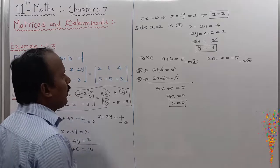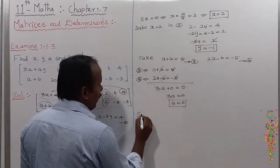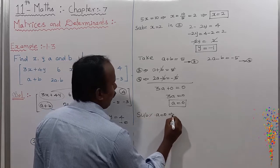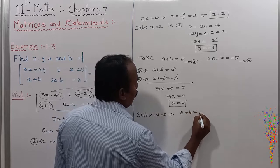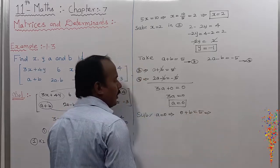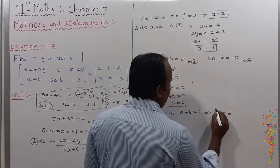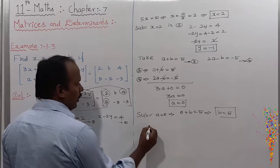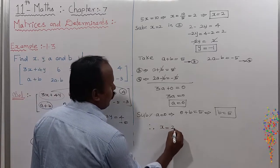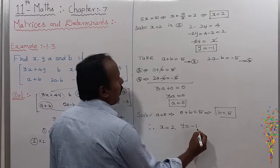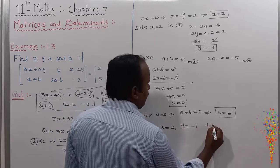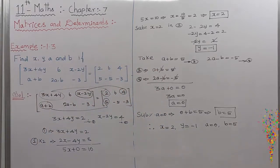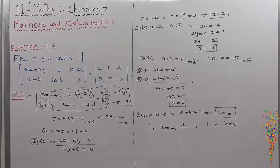A is equal to 0. Substituting the value of A into equation number 3: 0 plus B equals 5, which implies B equals 5. Therefore the final values are: X equals 2, Y equals minus 1, A equals 0, and B equals 5.